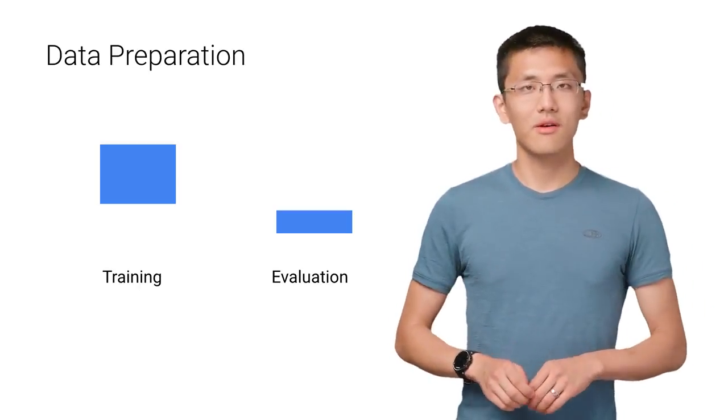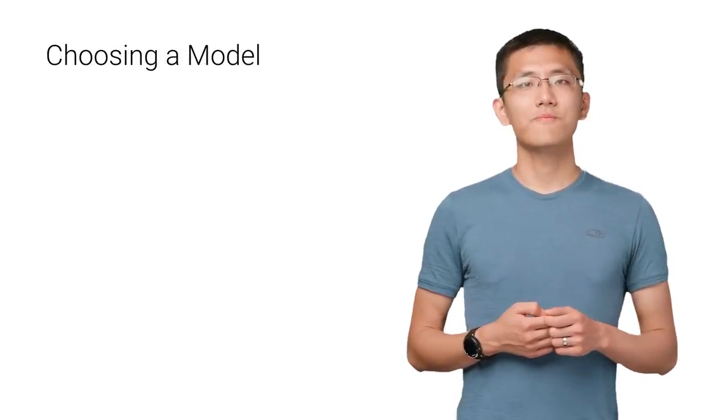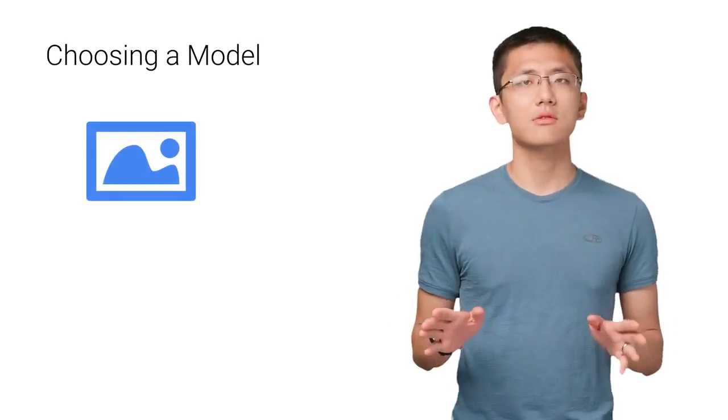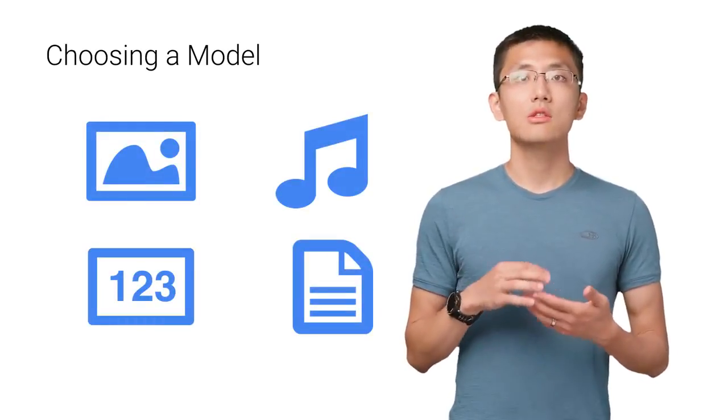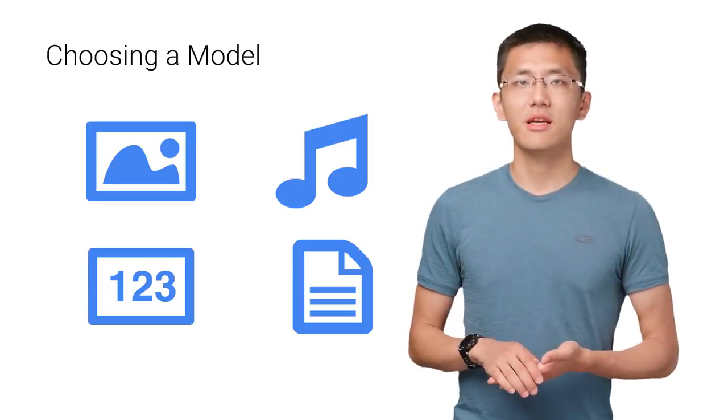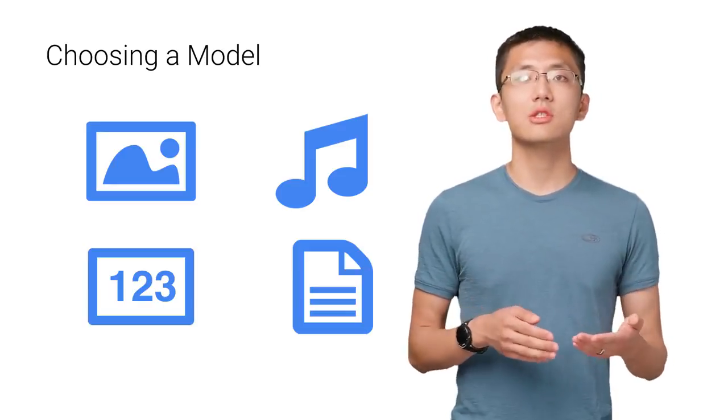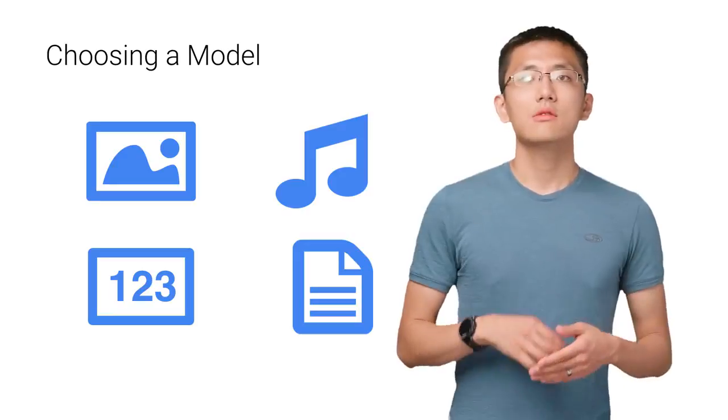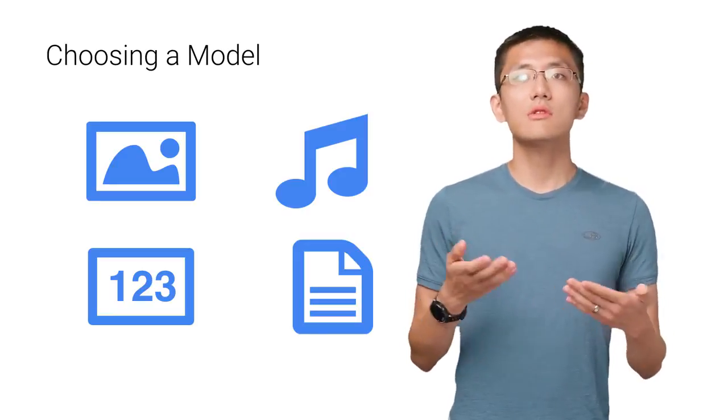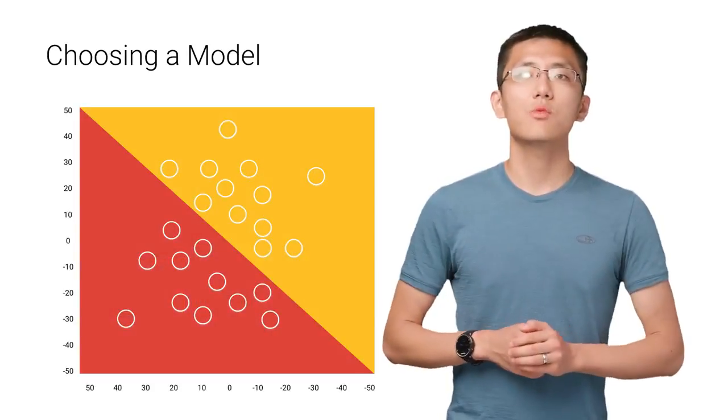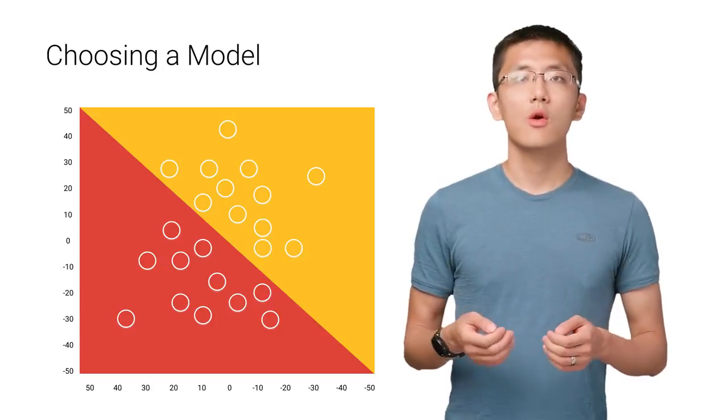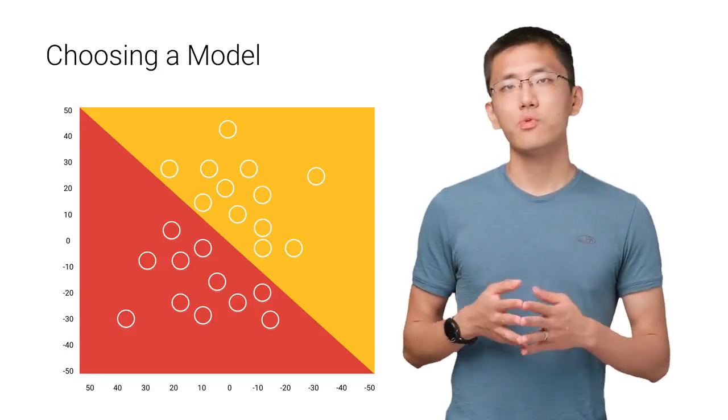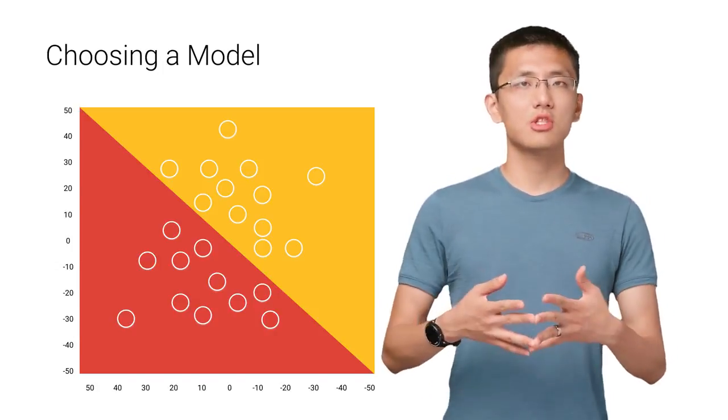The next step in our workflow is choosing a model. There are many models that researchers and data scientists have created over the years. Some are very well suited for image data, others for sequences such as text or music, some for numerical data, and others for text-based data. In our case, we have just two features, color and alcohol percentage. We can use a small linear model, which is a fairly simple one that'll get the job done.